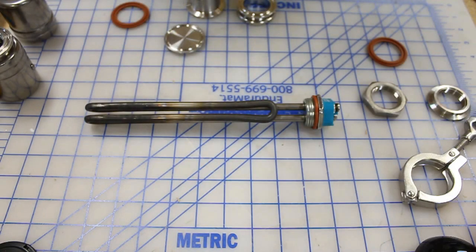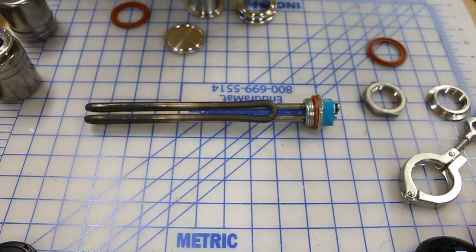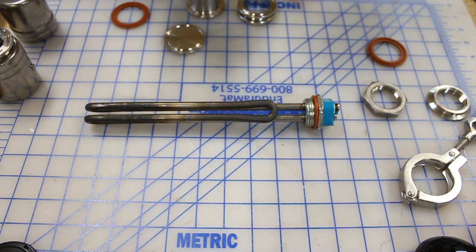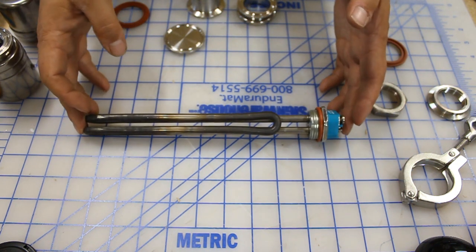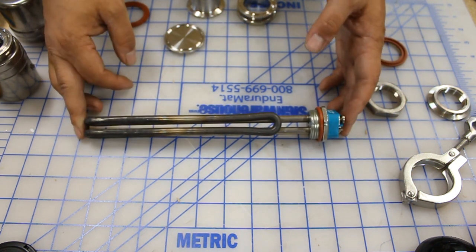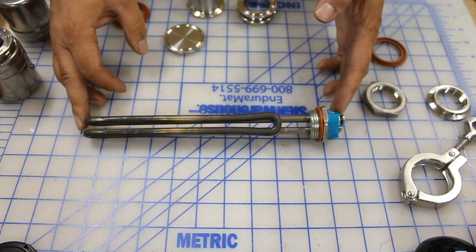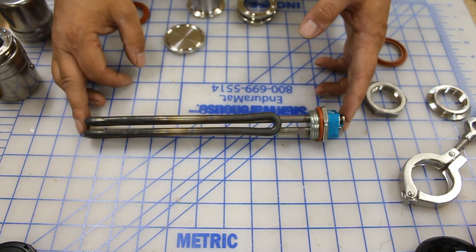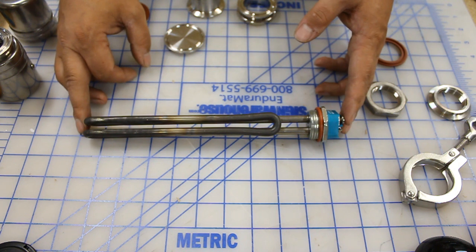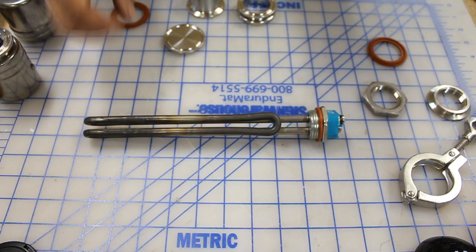In addition to installing these electrical heating elements in a RIMS tube configuration like the one I just showed you, another popular use is installing them directly into your brewing vessels like your hot liquor tank or boil kettle in an all-electric system. The challenge for that application has always been installing them in a leak-free method as well as encapsulating the electrical components.